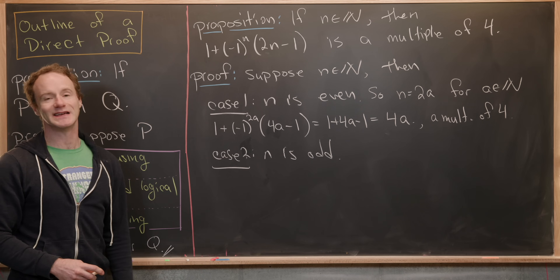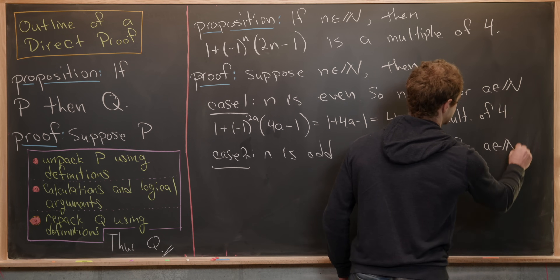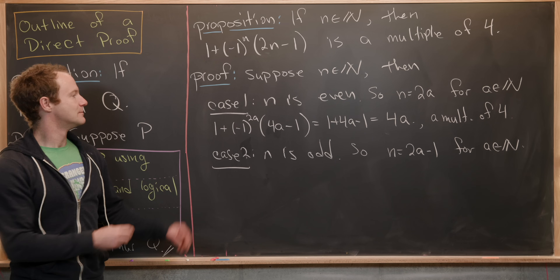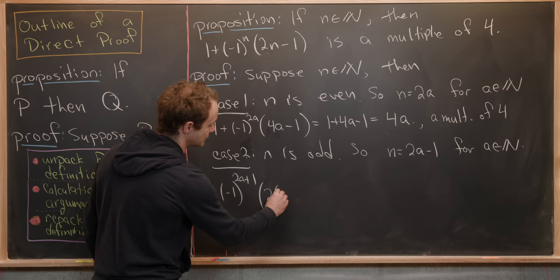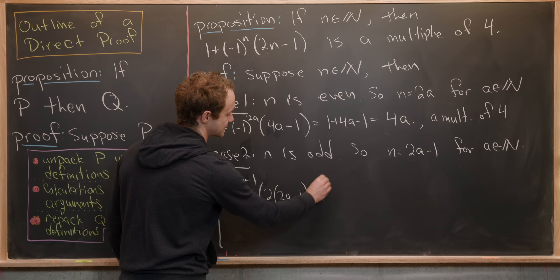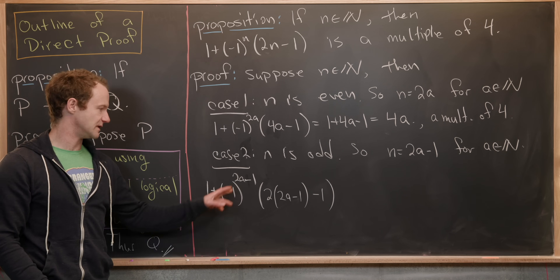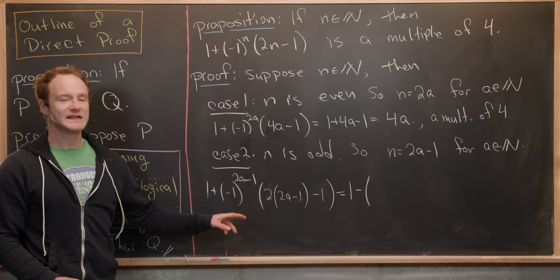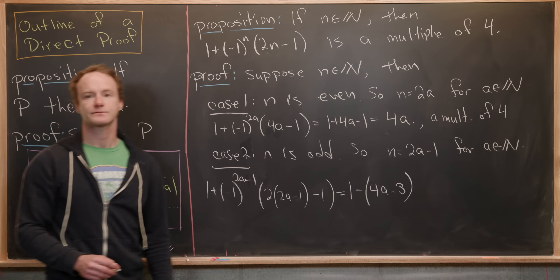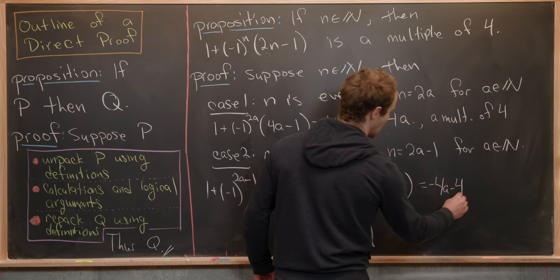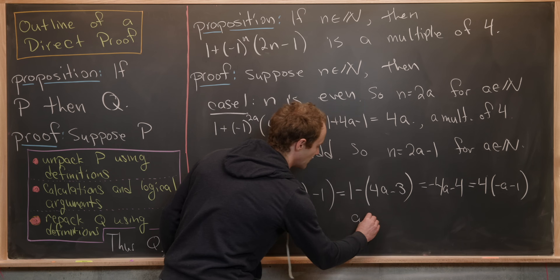Now Case 2: N is odd, so N = 2a − 1 for some natural number a. We look at 1 + (−1)^(2a−1) × (2(2a−1) − 1). Since (−1)^(2a−1) = −1 (odd exponent), this boils down to 1 − (4a − 2 − 1) = 1 − (4a − 3) = −4a + 4, which equals 4(−a + 1) = 4(1 − a) — again a multiple of four.